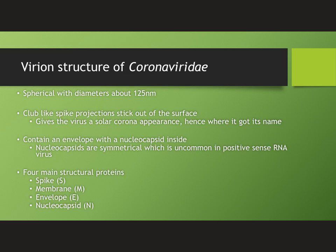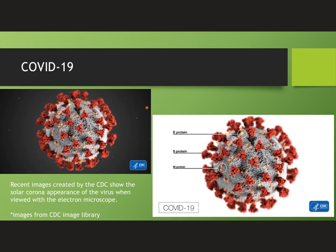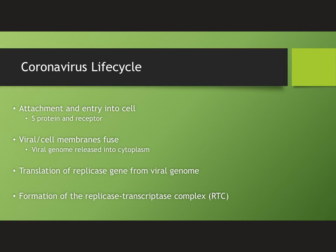Inside the nucleocapsid is where you would find the protected genome of the virus. Seen here are recent images created by the CDC which show the outward appearance of COVID-19 — what the virus would look like when viewed with an electron microscope. On the right-hand side, the picture is clearly labeled so that you can see the external proteins: the E protein, the S protein, and the M protein.